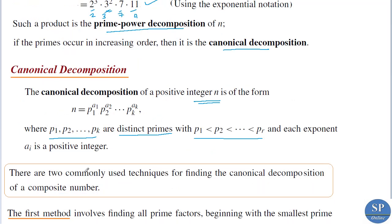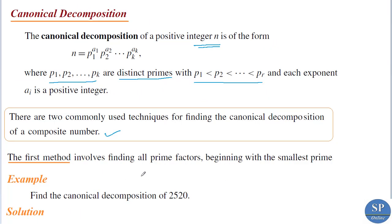We can use two methods to find the canonical decomposition of a composite number. The first method involves finding all the prime factors beginning with the smallest prime. That is, if we are given a composite number n, we check whether 2 divides n. If 2 is a factor of n then we write n = 2 × m. If 2 is not a factor of n then we check with 3, and so on.